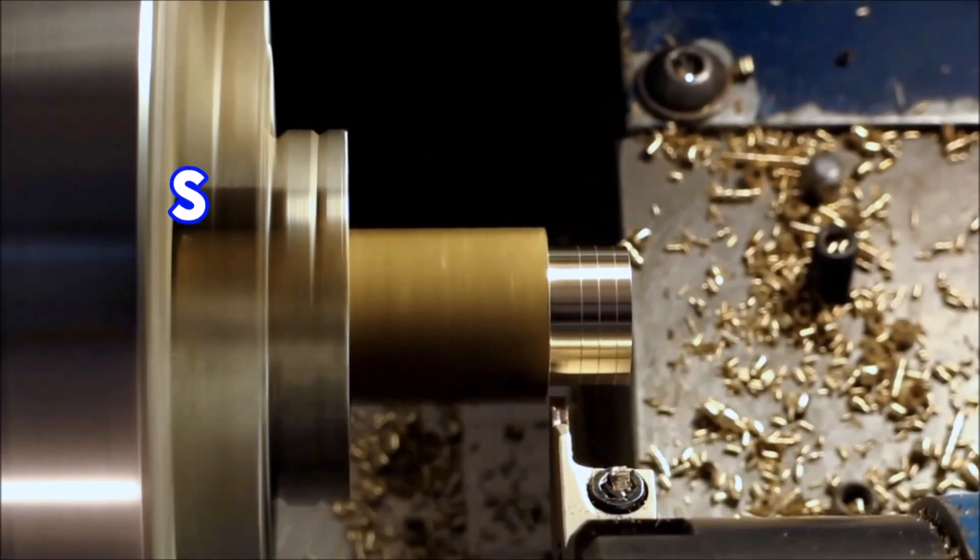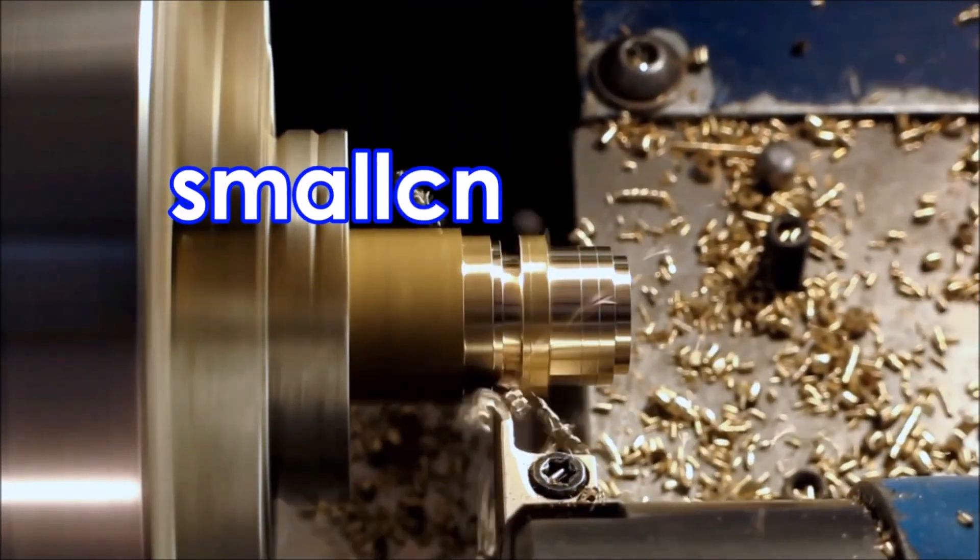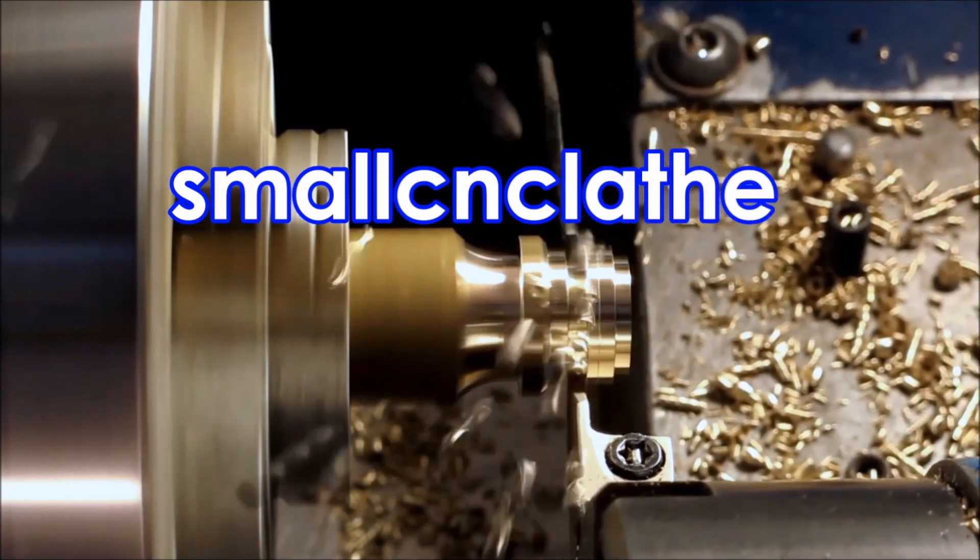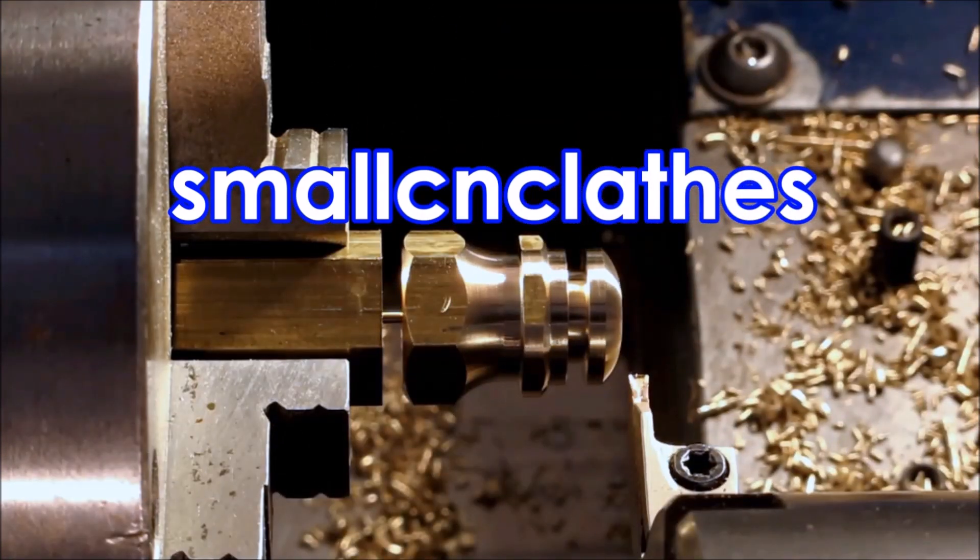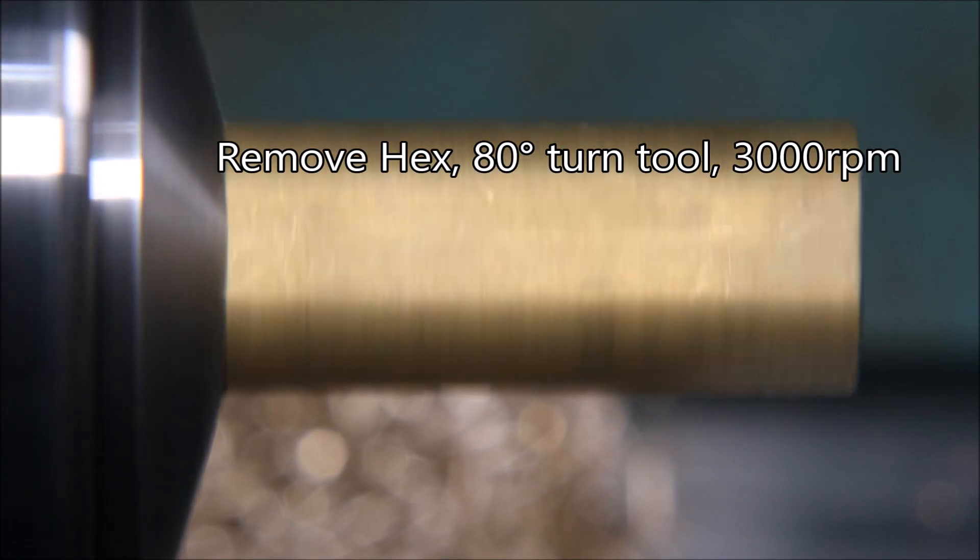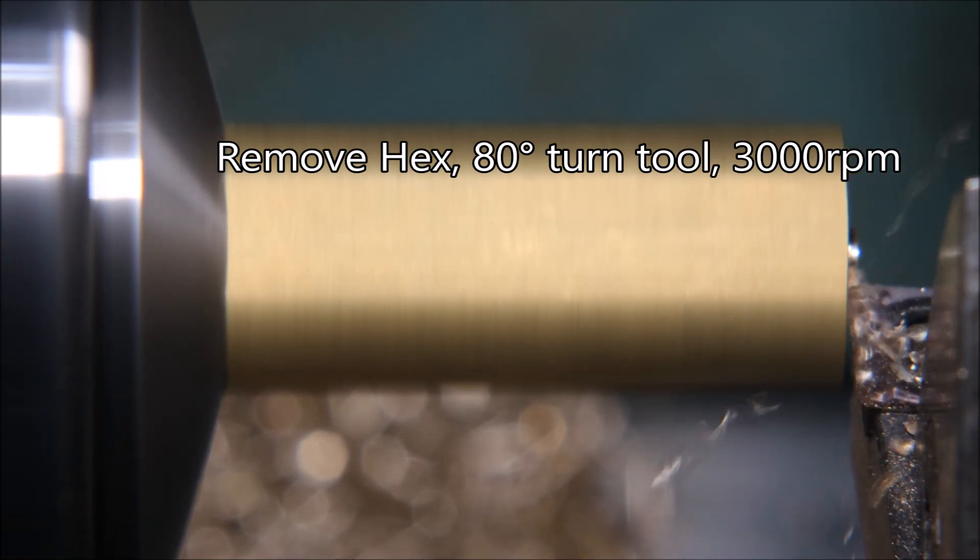G'day folks, in this video I'm making a small brass part which has a model engineer 3.8 by 32 TPI thread. I'll be making these parts from some 10mm hex brass already cut to length. I have hundreds of these things.